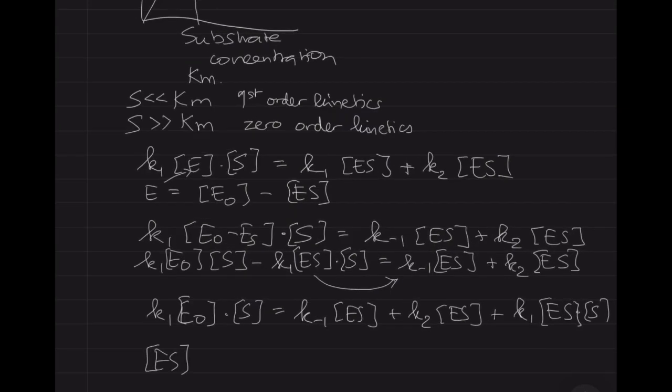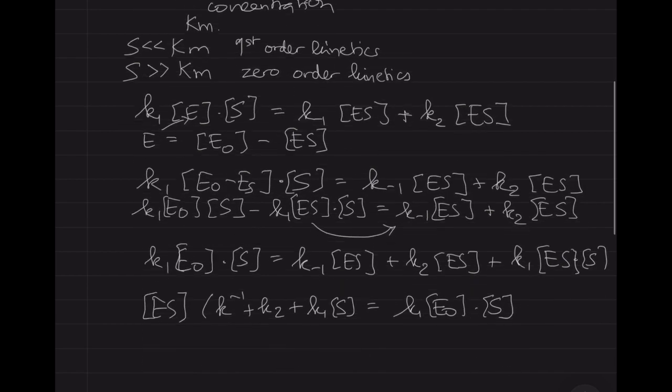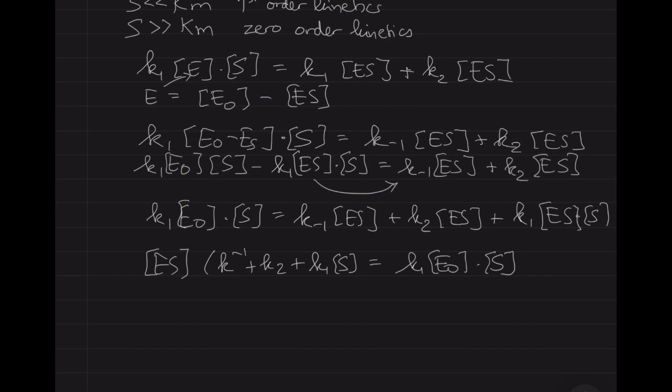And then on the other side we have K1 ES times the substrate concentration. Now if we bring all of that over to the other side we can get an expression for the enzyme substrate complex. And so that will be equal to K1 times ES times the substrate concentration divided over K-1 plus K2 plus K1 times the substrate concentration.